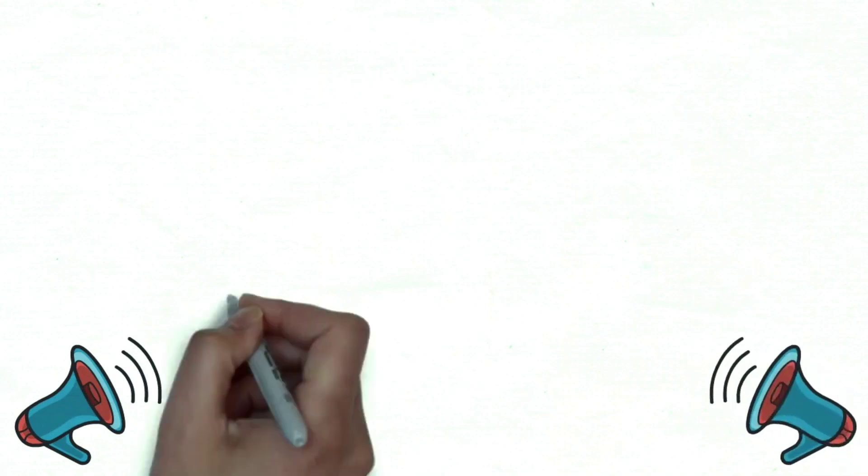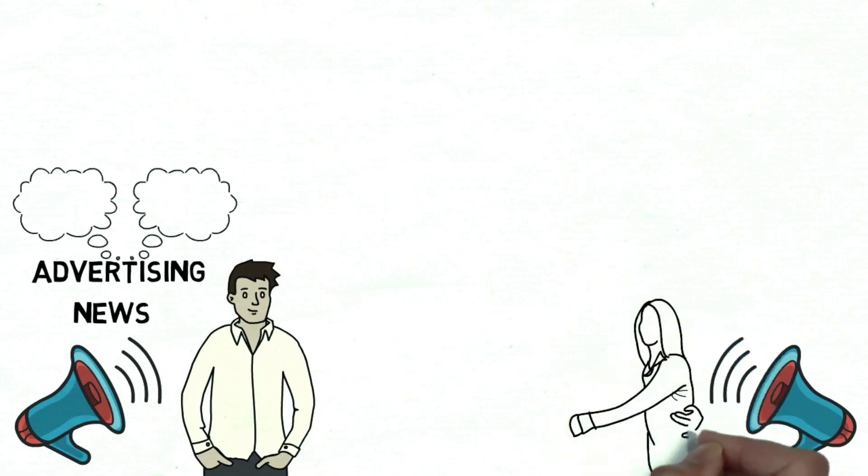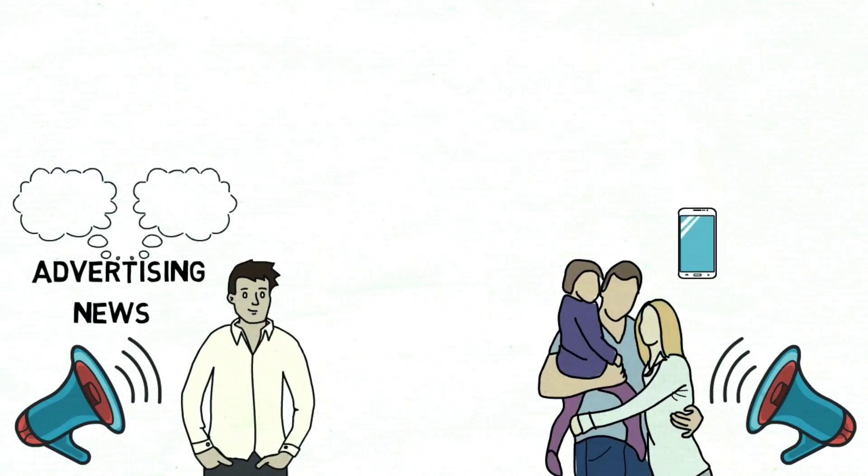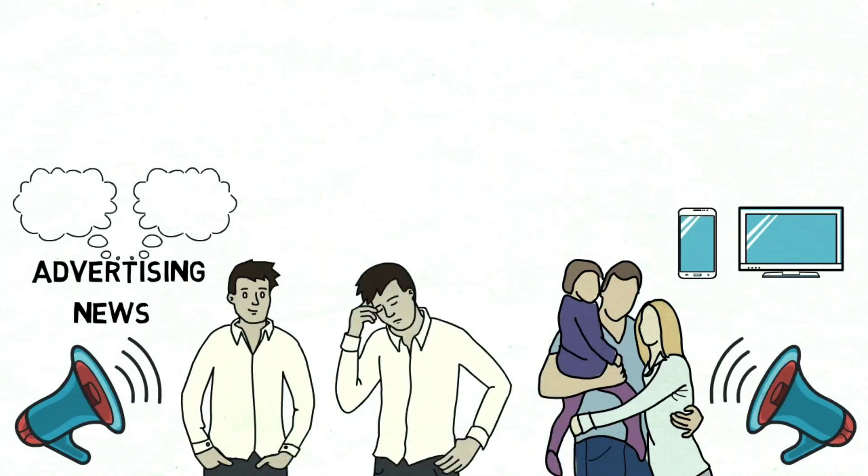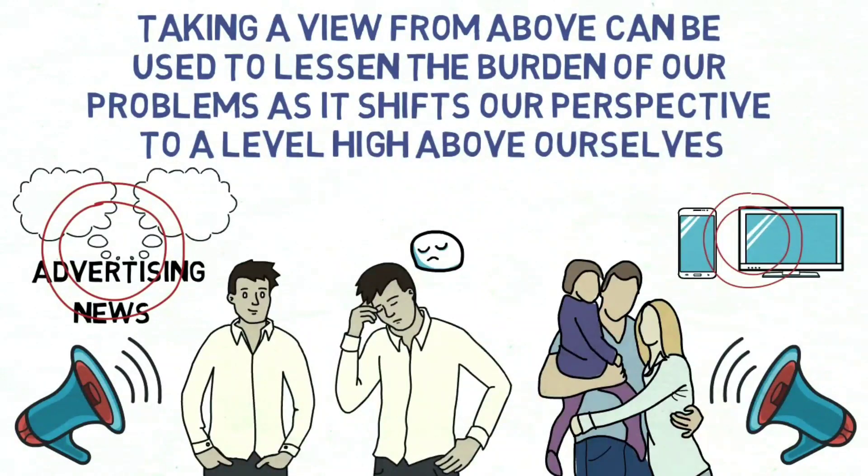In today's world, there is a lot of noise. Every time we step out the door, we are presented with advertising, marketing, news, opinion, and distraction. When we are not at work or with our family, we are on our phone, our radio is on, or the TV is on, or on the computer. All of this causes mental burnout. It is difficult to find space to think and breathe. Our attention is being captured by apps, games, videos and shows, and the fact that our attention is often on other things makes it more difficult for us to work through our problems, anxieties, stresses and commitments. To help with this, this stoic exercise of taking a view from above can be used to lessen the burden of our problems as it shifts our perspective to a level high above ourselves.